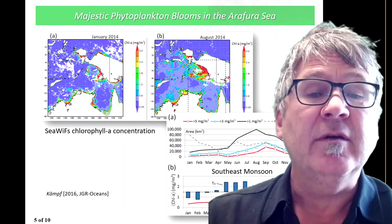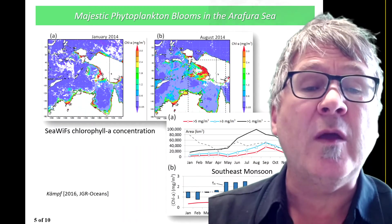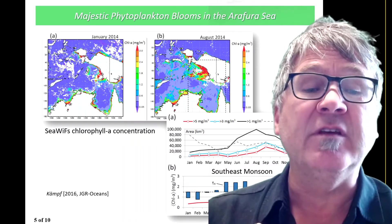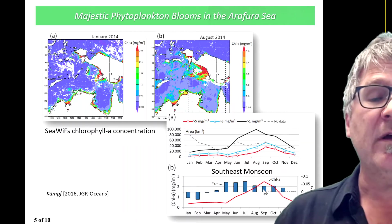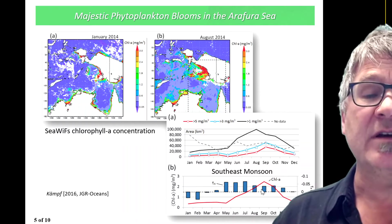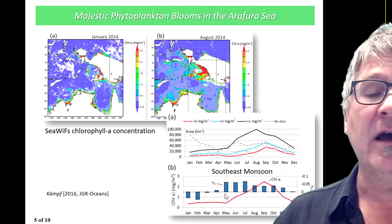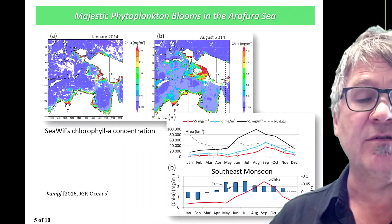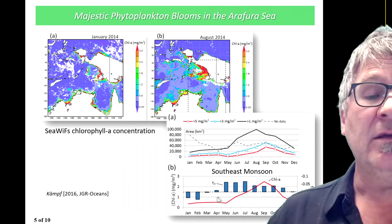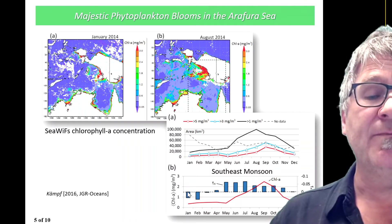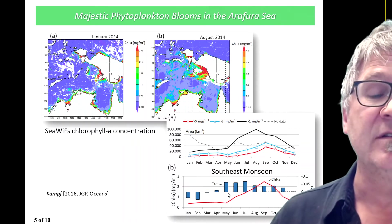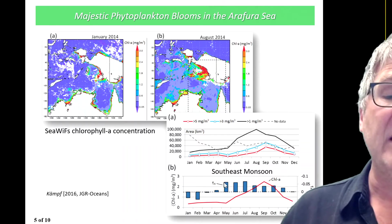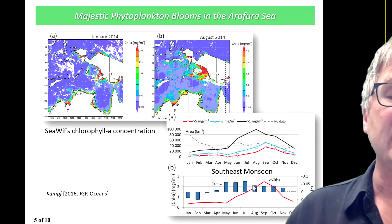This happens during the time where you actually have winds blowing from the east, and this is now shown here in the bottom graph. The bottom graph shows you wind stress. The winds from the east are these blue bars in the graph. You have it for January; February is wind coming from the west, and so on. Then you have a transition where the southeast monsoon starts — very strong in May, June, July, and August.